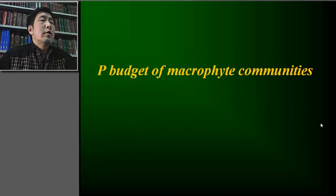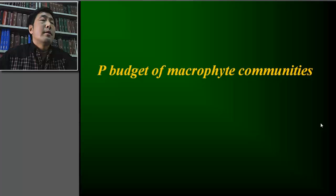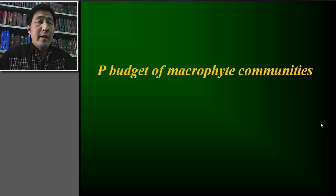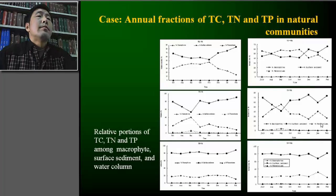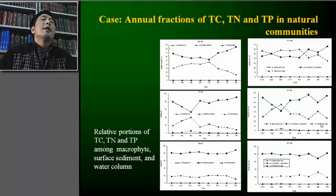Of course, macrophytes can mobilize phosphorus from the sediment, but macrophytes also show a clear life cycle. How about the phosphorus budget during the whole growing season or a whole year? This slide shows annual fluctuations of total phosphorus, total nitrogen, and total carbon in two natural macrophyte communities.